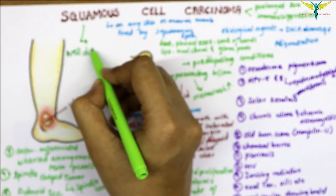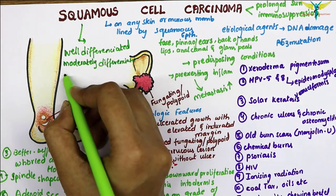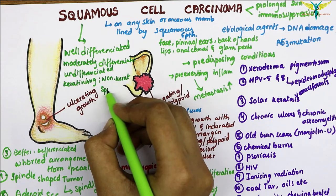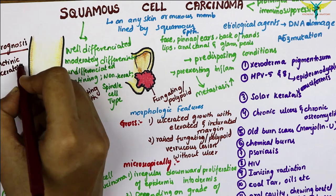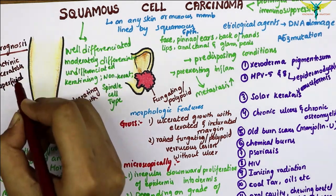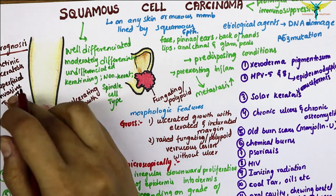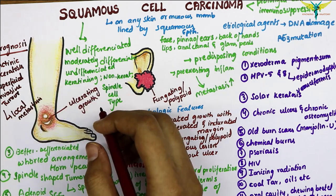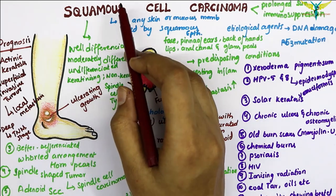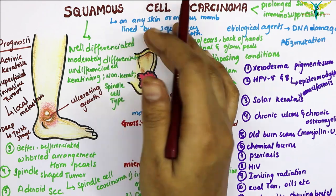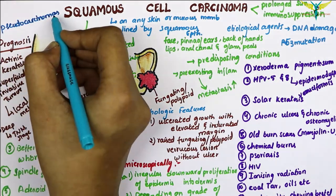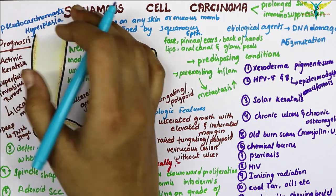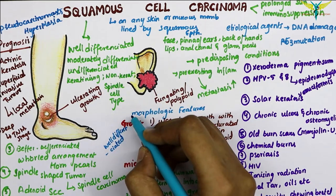Squamous cell carcinoma is often well-differentiated; more rarely it can be undifferentiated, keratinizing, non-keratinizing, or spindle cell type. In terms of prognosis, the superficial invasive tumor induced by actinic keratosis may metastasize locally, and the prognosis of deeply invading tumors depends upon TNM staging. All variants of squamous cell carcinoma show inflammatory reactions between the collections of tumor cells.